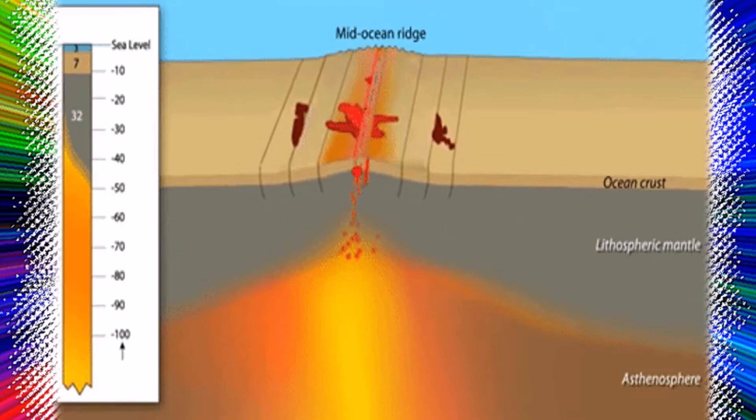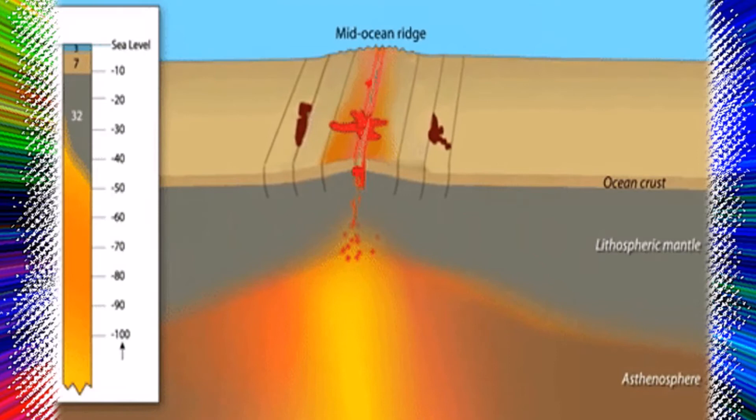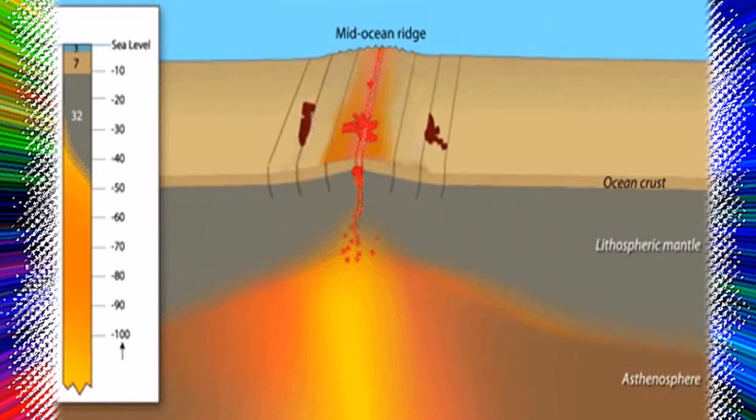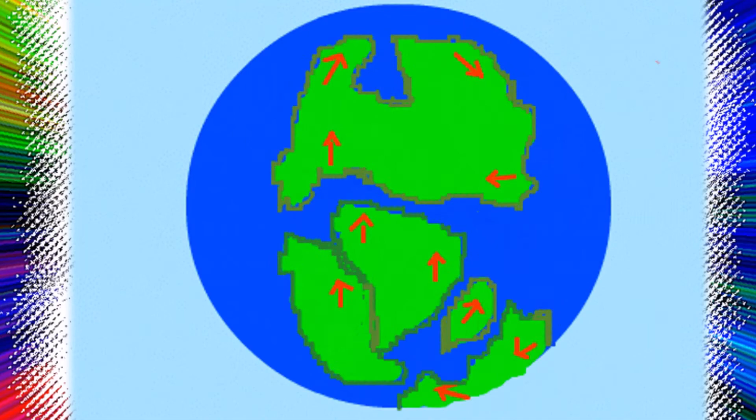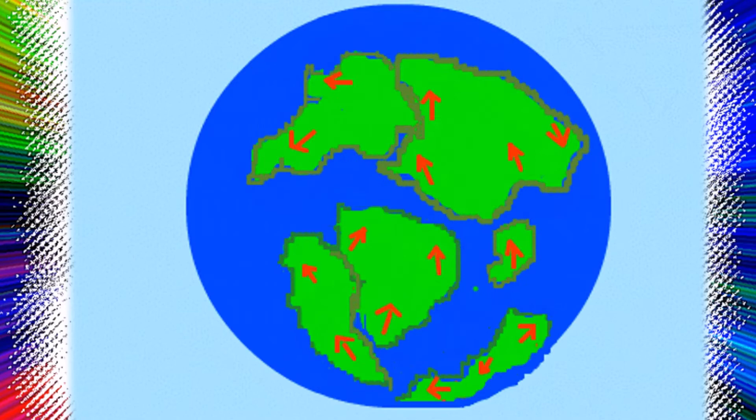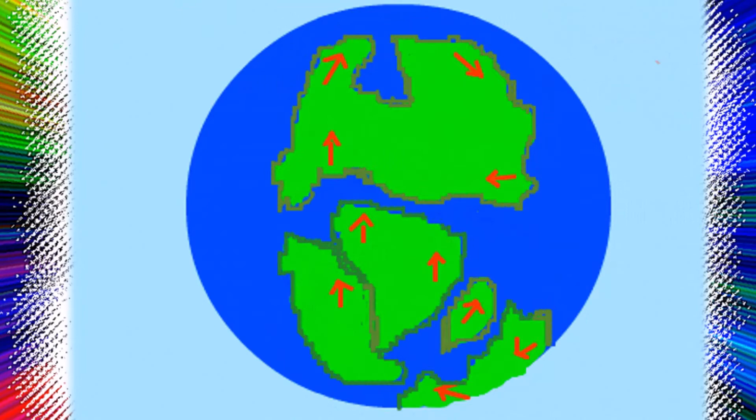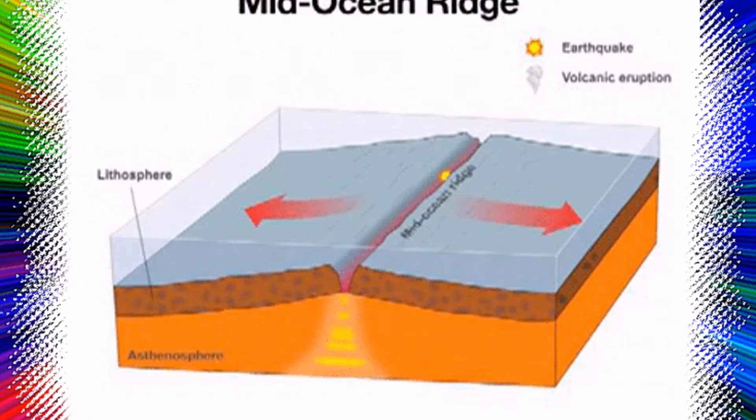After World War II, rapid advances were made in the study of the relief, geology, and geophysics of the ocean basins. Largely because of the efforts of American oceanographer Bruce C. Heeson, American geologist Henry W. Menard, and American oceanic cartographer Marie Tharp, ocean basins — which constitute more than two-thirds of Earth's surface — became well enough known to permit serious geologic analysis. The studies revealed three very important types of features present on the ocean floor.